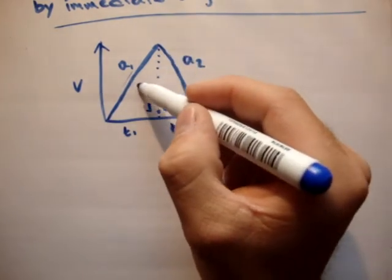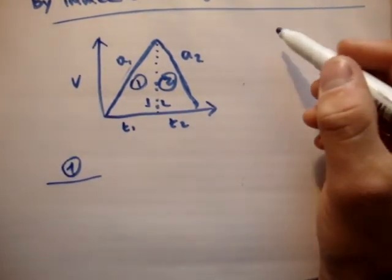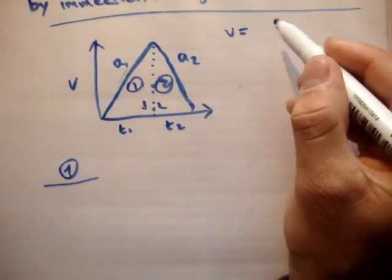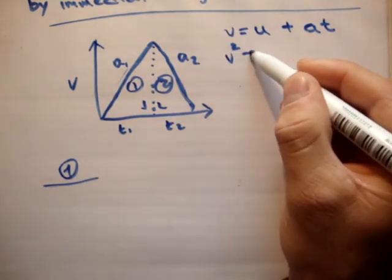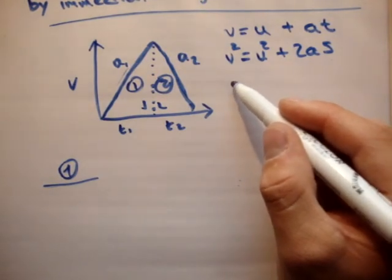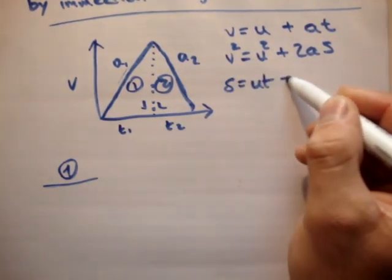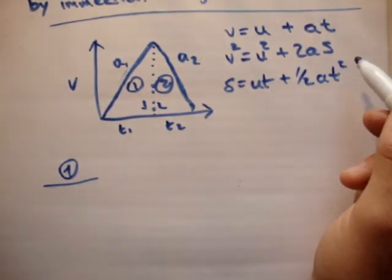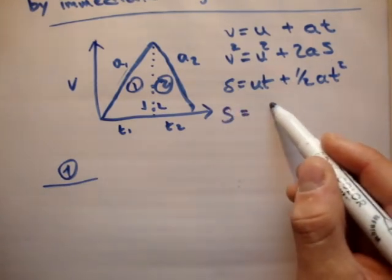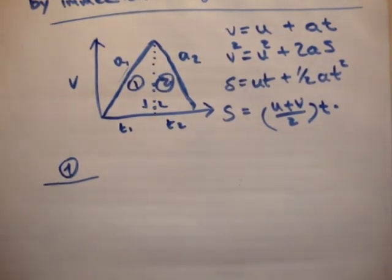What we'll do is analyze the motion in the first triangle and then the second triangle. First, I'll write out the UVAST formulas: v = u + at; v² = u² + 2as; s = ut + ½at²; and s = ((u + v) / 2) × t. Sorry about my phone — I should put it on silent before doing these videos.